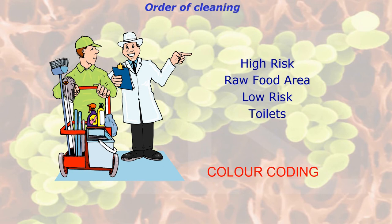You also get a colour coding system for preparation boards. You use a different colour board for different foods: yellow for cooked food, red for raw meat, blue for raw fish, white for sandwiches and dairy products, green for vegetables and fruit, and brown for soiled vegetables — things grown in the soil.